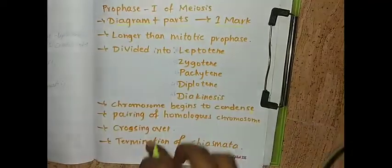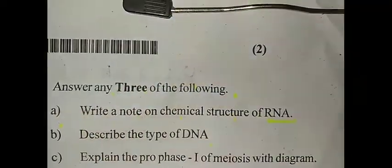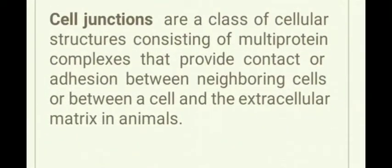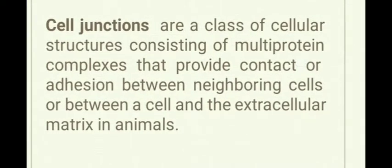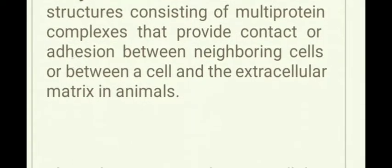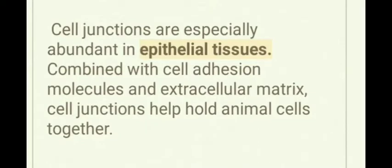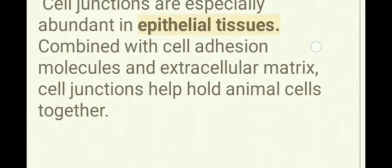The next question is write a note on cell junctions. Cell junctions are a class of cellular structures consisting of multiprotein complexes that provide contact or adhesion between neighboring cells or between a cell and the extracellular matrix. In animals, they also maintain the paracellular barrier of epithelia and control paracellular transport. Cell junctions are especially abundant in epithelial tissues. Combined with cell adhesion molecules and extracellular matrix, cell junctions help hold animal cells together.